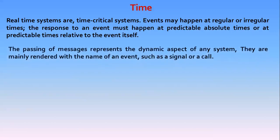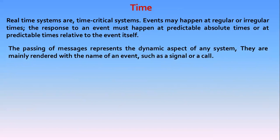The passing of messages represents the dynamic aspects of any system. When we model the time-critical nature of a system with UML, we can give a name to each message in an interaction to be used in time expressions. Messages in an interaction are usually not given names; they are mainly rendered with the name of an event such as a signal or a call.